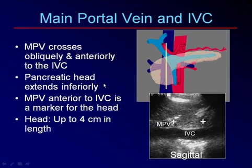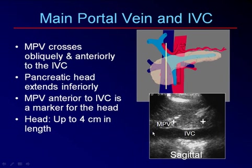The main portal vein crosses obliquely and anteriorly to the inferior vena cava. The pancreatic head extends just inferior to that point of crossover. On a sagittal section, the inferior vena cava and this round dark area — the main portal vein crossing in front of the IVC — serve as our marker for the head of the pancreas, which extends about four centimeters inferiorly.